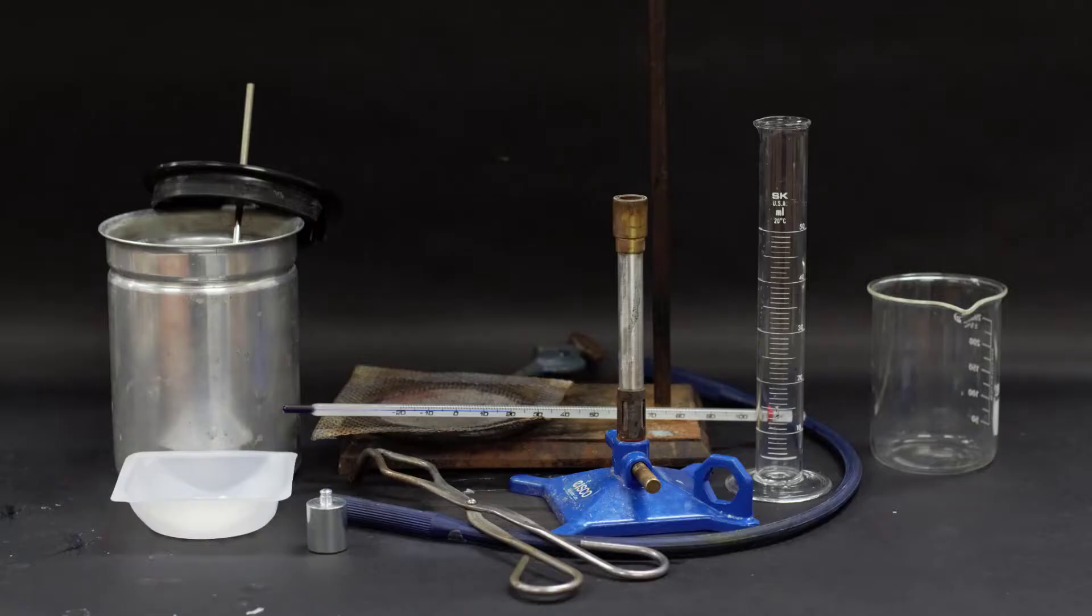The materials we'll need here are the calorimeter, a ring stand with a ring and mesh, a Bunsen burner, a 50 milliliter graduated cylinder, a 250 milliliter beaker, tongs, a thermometer, a metal cylinder, and a soluble salt compound.